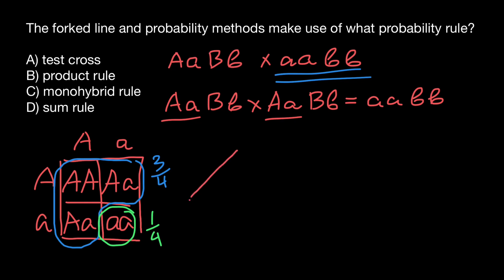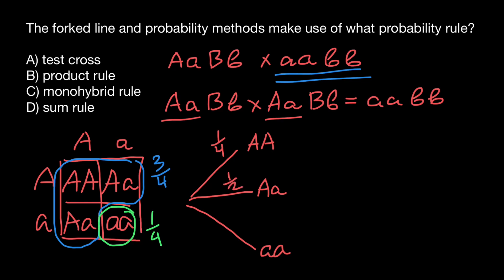That means we may have three variants. We can get capital A capital A, capital A small a, and small a small a. The probability of getting capital A capital A is one quarter. The probability of having heterozygous for gene A is one half. And the probability of having two recessive alleles is one quarter. So let's put one quarter here.